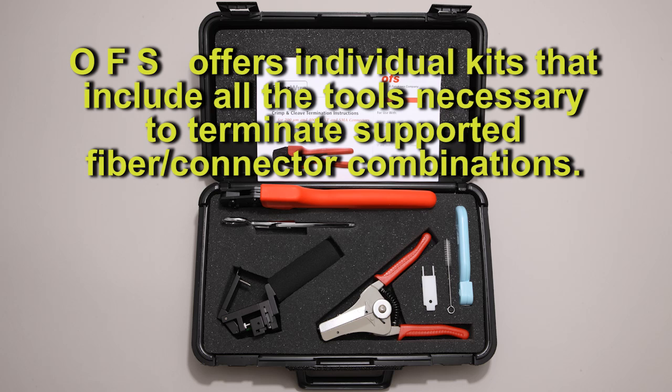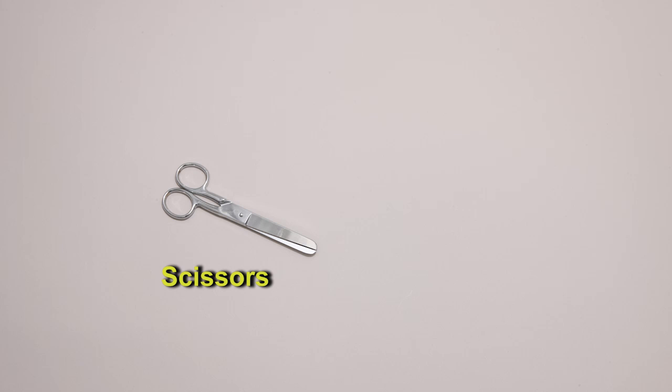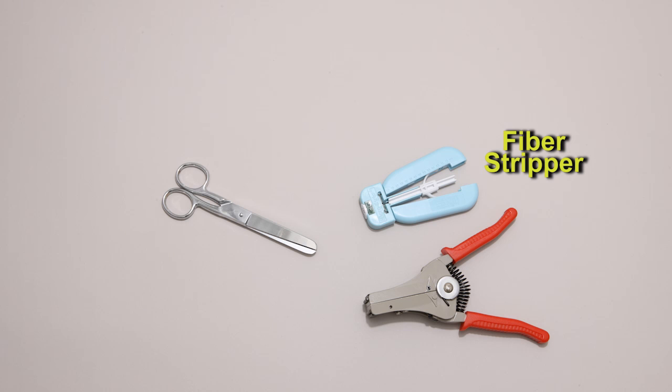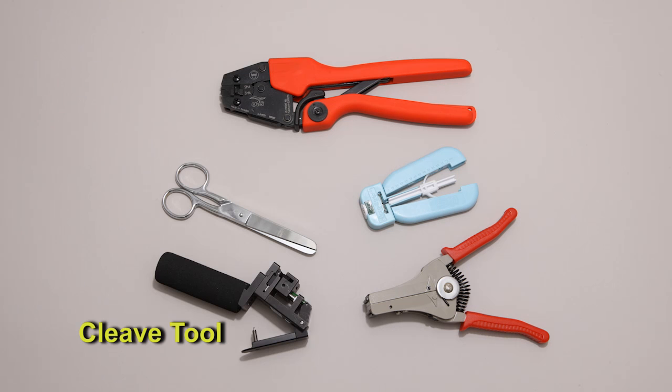OFS offers individual kits that include all the tools necessary to terminate supported fiber connector combinations. Each kit is packaged in a portable hard plastic case and includes printed instructions, scissors capable of cutting aramid yarn, a cable stripper to remove the cable's outer jacket, a fiber stripper to remove a portion of the cladding, a